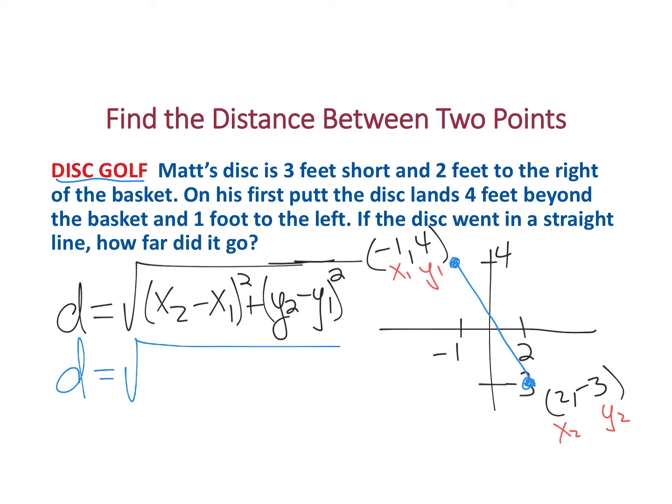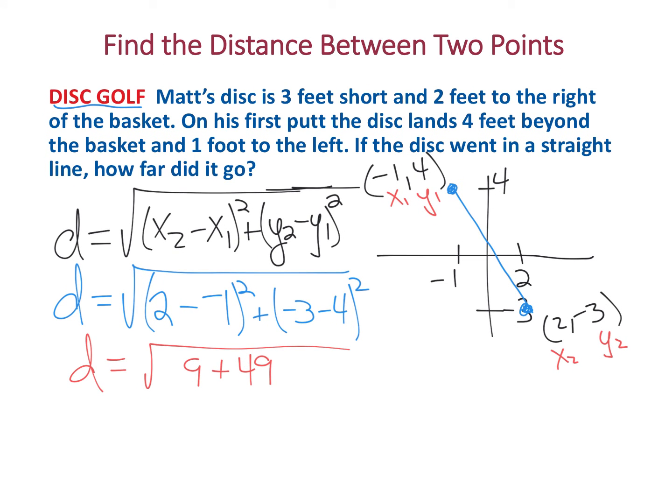The distance is the square root of X2, so X2 we labeled as 2 minus a negative 1 in this case, all squared, plus we're going to take Y2, which we said was negative 3, and we're subtracting Y1, which was 4, all squared. To simplify this, we basically add the middles and then square them. This is the square root of 3 squared plus 7 squared. So that's 9 plus 49, which is 58. Our final distance is the square root of 58, which if you approximate as a decimal, we get about 7.6 feet.